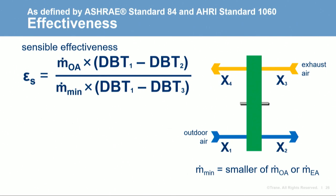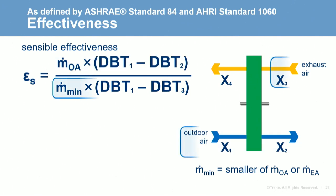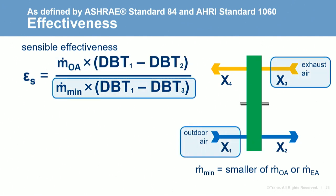Effectiveness is defined as the actual energy transferred divided by the theoretical maximum possible energy transfer between the two airstreams. For sensible effectiveness, the numerator is the mass flow of the outdoor air passing through the supply side of the device times the change in dry bulb temperature from entering to leaving — from location one to location two. The denominator is the maximum possible energy transfer, dictated by the dry bulb temperature of the air entering at location one minus the temperature of the entering exhaust air at location three.